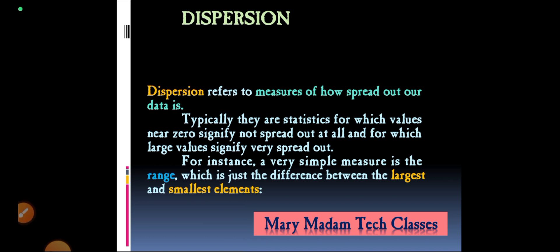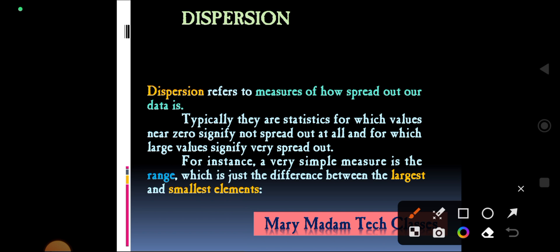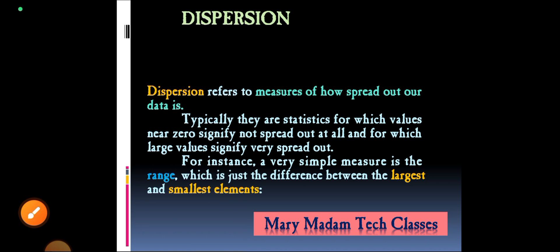What is dispersion? Dispersion refers to measures of how spread out our data is. In statistics, dispersion helps to understand the distribution of data. Statistics for which the value zero signifies not spread out at all, and larger values signify very spread out. If the value is non-zero and large, the data is very spread out.